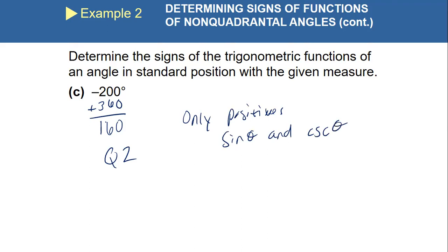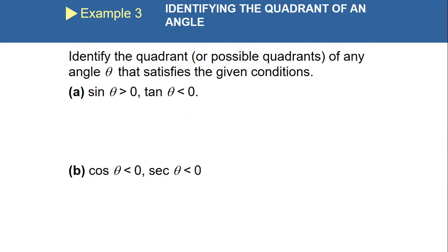How do we feel about identifying the quadrants of positivity? Doable? Good. Now let's take it up a notch — I want you to identify the quadrant given certain information. Remembering 'All Students Take Calculus.' We're looking for a quadrant where sine θ is positive and tan θ is negative — greater than zero means positive, less than zero means negative. Sine is positive in quadrants one and two; tangent is negative in quadrant two. So the answer is quadrant two.